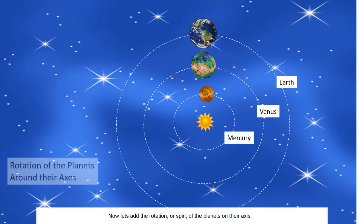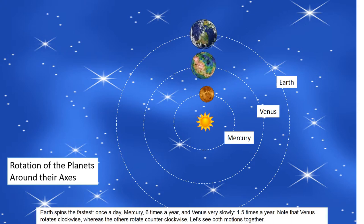Now, let's add the rotation, or spin, of the planets on their axis. Earth spins the fastest, once a day. Mercury, six times a year, and Venus very slowly, 1.5 times a year. Note that Venus rotates clockwise, whereas the others rotate counterclockwise.